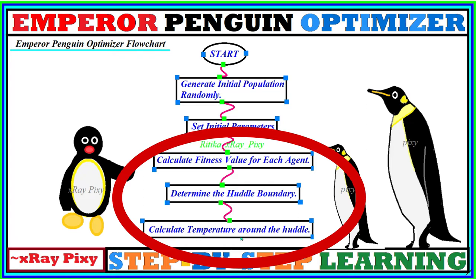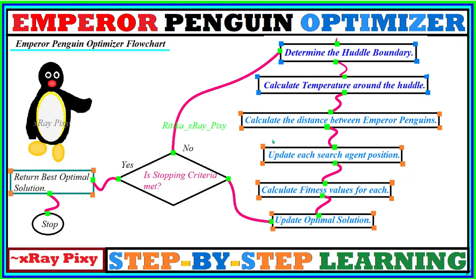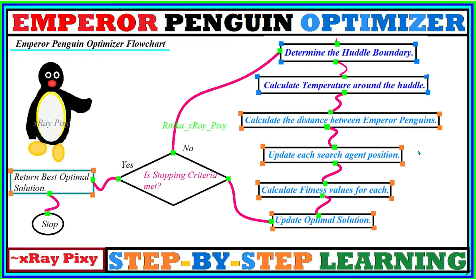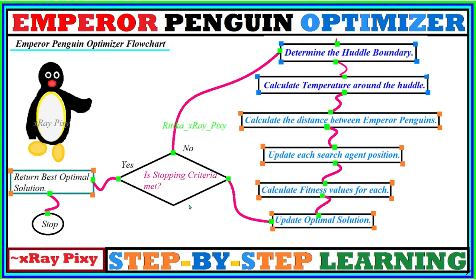Next, we calculate the temperature profile around the huddle. After that, we calculate the distance between the emperor penguins and then update each search agent's position. We then calculate the fitness values and select the best among all. If a better optimal solution is found compared to the previous one, we update the optimal solution. We then check the stopping criteria — if matched, we return the best optimal solution; otherwise, we repeat the loop from the huddle boundary.